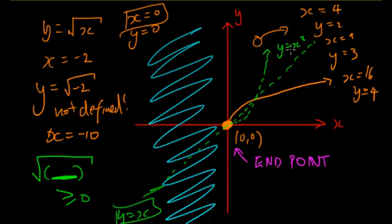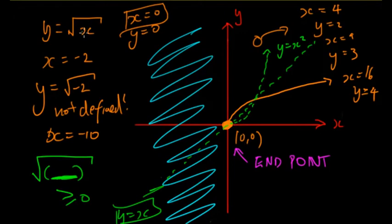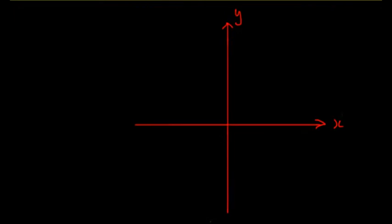The square root function is reflected in the line y equals x relative to y equals x squared. When we talk about inverses, that's when you swap y and x. Swapping y and x in the square root equation gives back the parabola. We're talking about the positive end only, since it should technically be plus or minus square root of x.